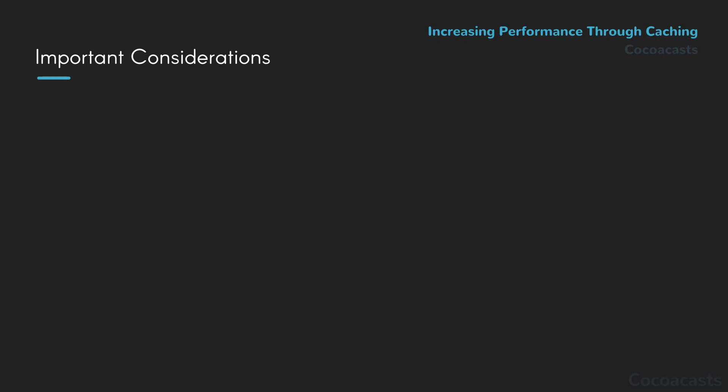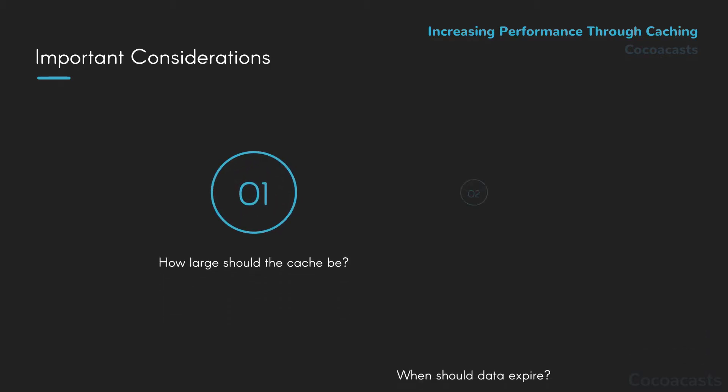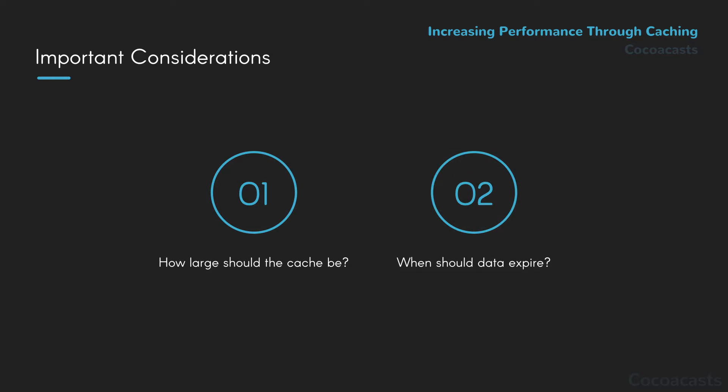Deciding when a resource should be served from cache is an important consideration — that decision directly affects the efficiency of the cache. A cache should have a certain size, and the data it stores should expire at some point to make sure the application doesn't show the user stale data that is no longer relevant. We won't cover the nitty-gritty details of caching in this episode; the focus is improving performance by implementing a caching strategy.